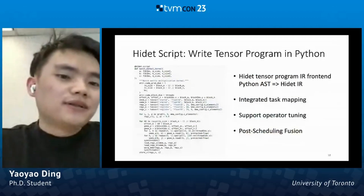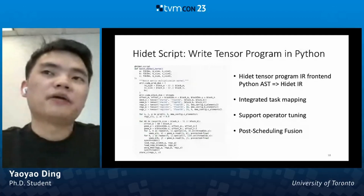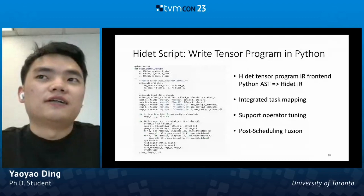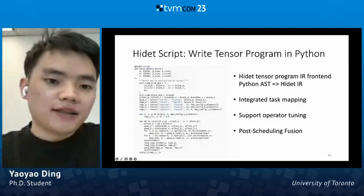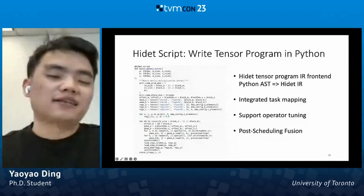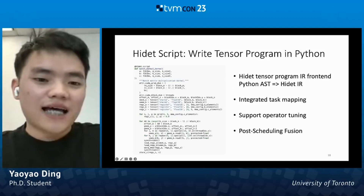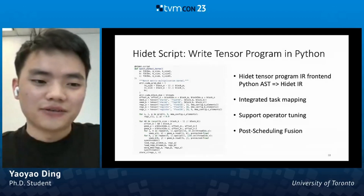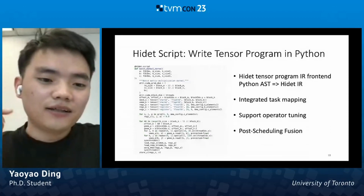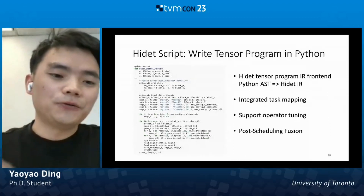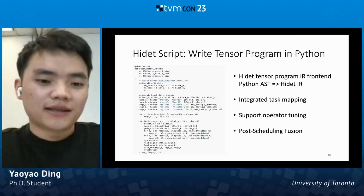There is also ongoing work called HiDet Script. We hope to write tensor programs directly in Python, inspired by Taichi and Triton. Basically, we directly translate Python AST to HiDet IR, which acts as a front-end of the tensor program IR in HiDet. We integrated the task mapping abstraction into it so that we can directly use task mapping within it. It supports operator tuning so we can tune the hyperparameters used in the task mapping, and it supports post-scheduling fusion.